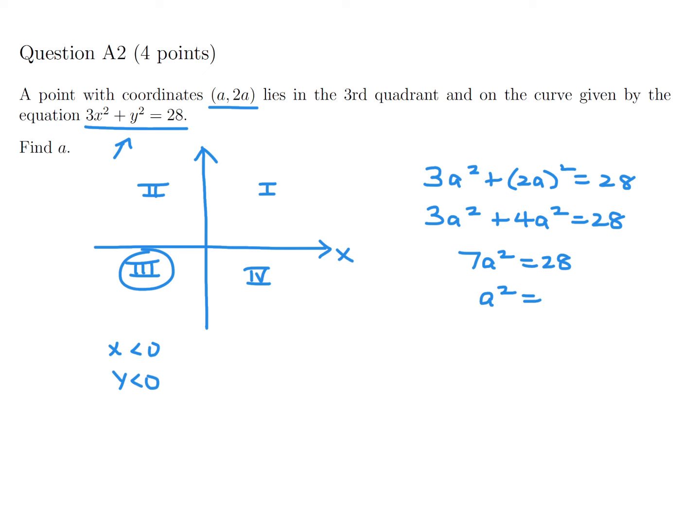And therefore A squared would be 4, and A would be plus or minus 2. And if A is plus or minus 2, we obviously want the negative one because we want both of them to be negative.